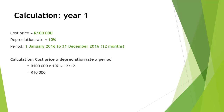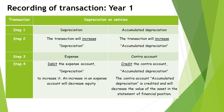Calculating the depreciation on the vehicle using the straight line method means that you use the cost price times the depreciation rate, then times the number of months in the period divided by 12. Therefore, it is 100,000 Rand cost price times 10% times 12 months divided by 12 months, totaling 10,000 Rand depreciation to be recorded in the first year.